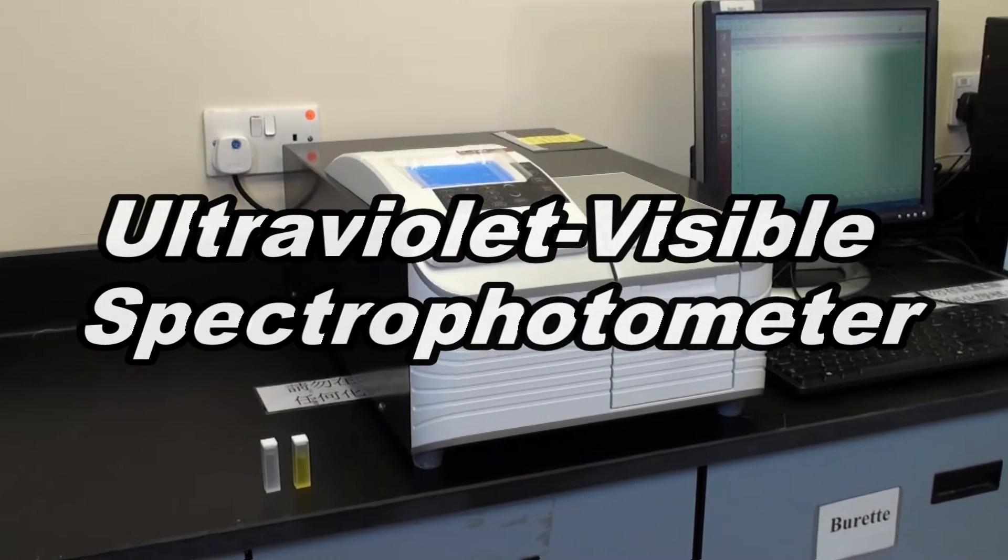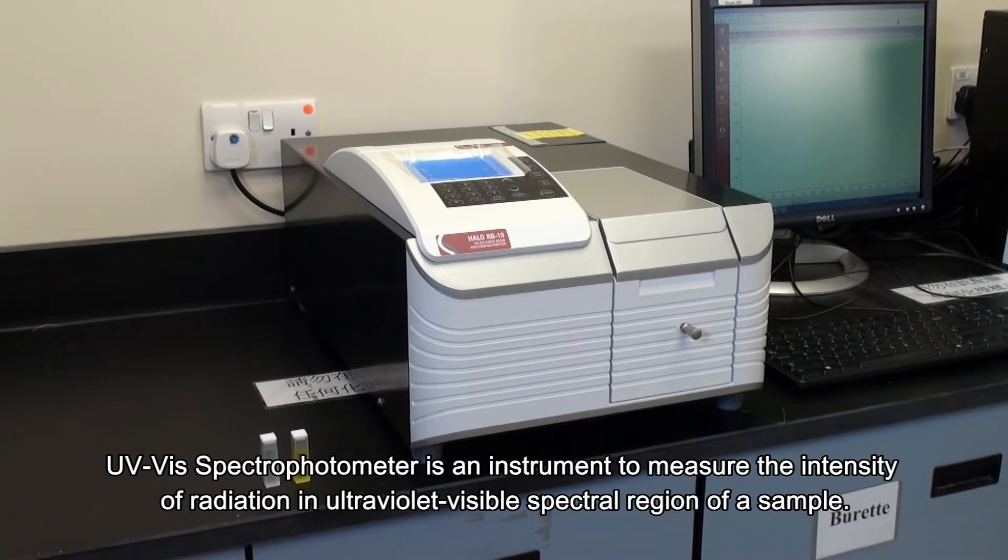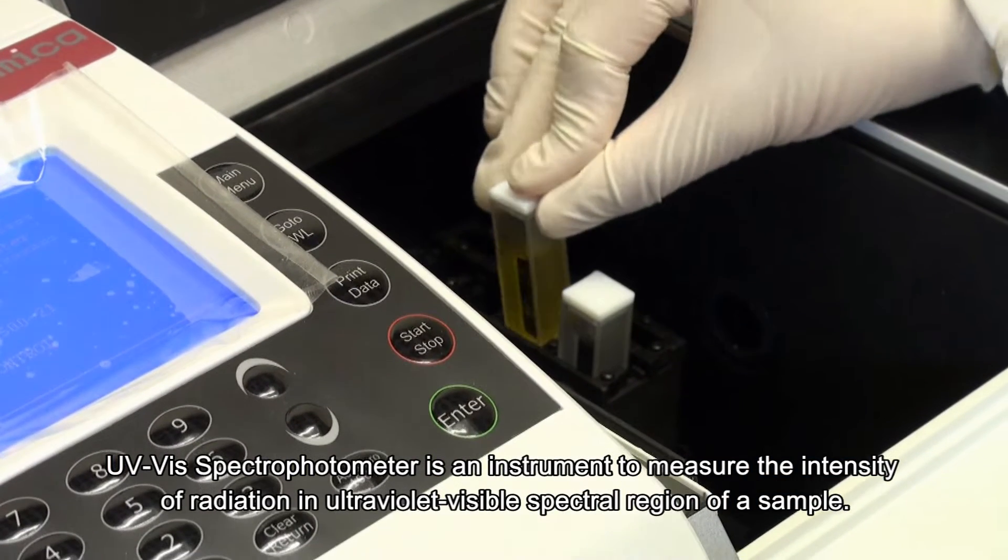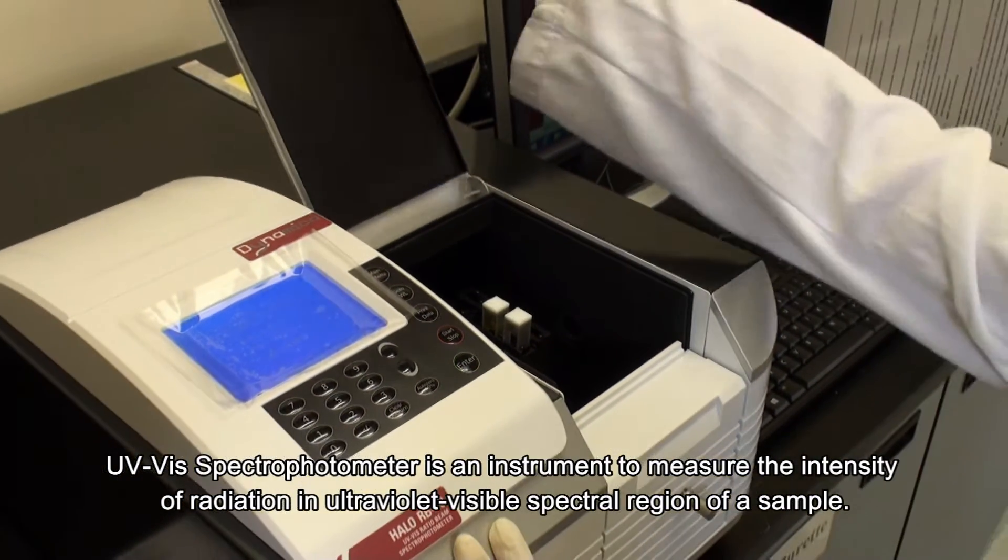Ultraviolet visible, UV-vis spectrophotometry. UV-vis spectrophotometer is an instrument to measure the intensity of radiation in ultraviolet visible spectral region of a sample.